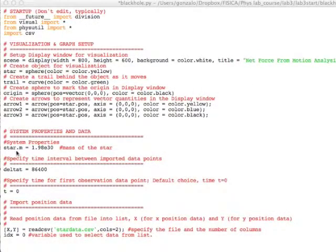Here is the Python code. We can write the star mass, and the delta t is one day for this data.